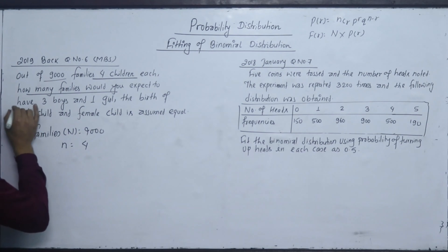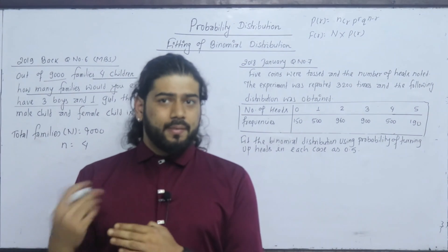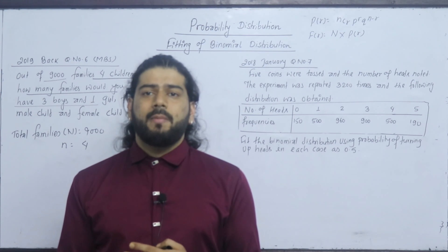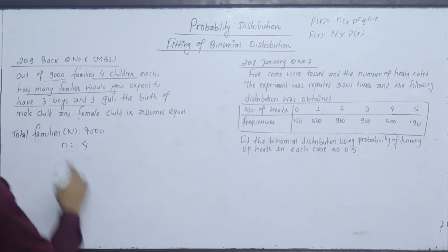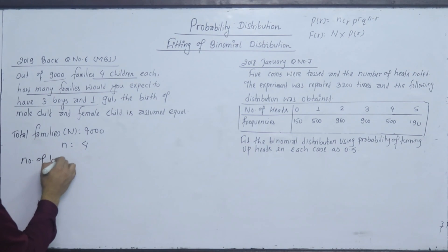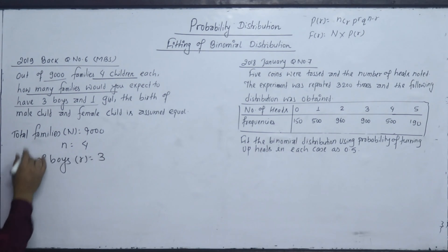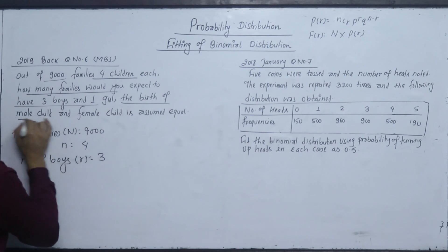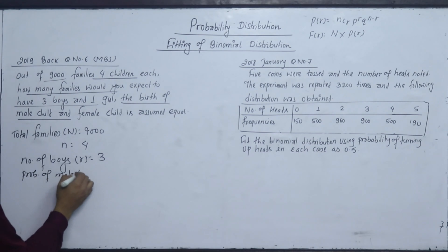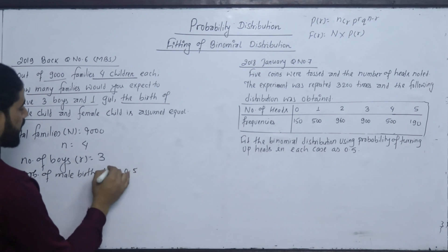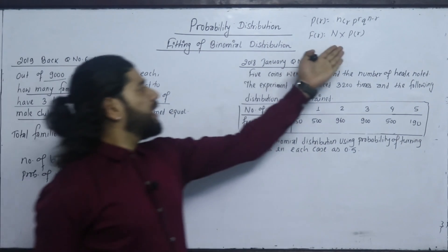Consider three boys and one girl. The birth of a male child and female child is equal. So the probability of male birth P is equal to 0.5, and Q is equal to 1 minus 0.5. The formula is N into nCr into P to the power R into Q to the power N minus R.